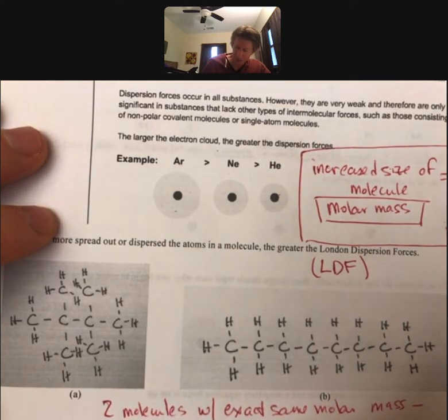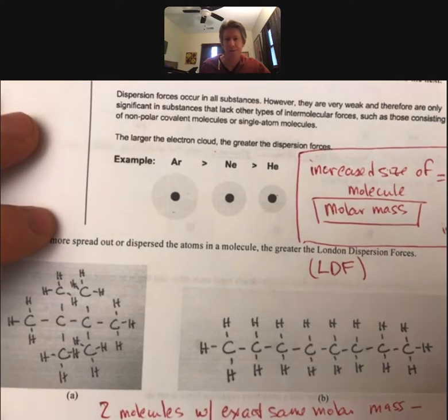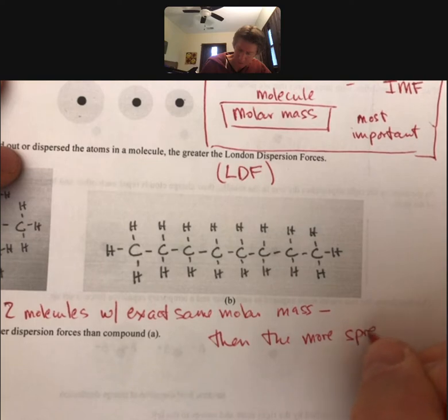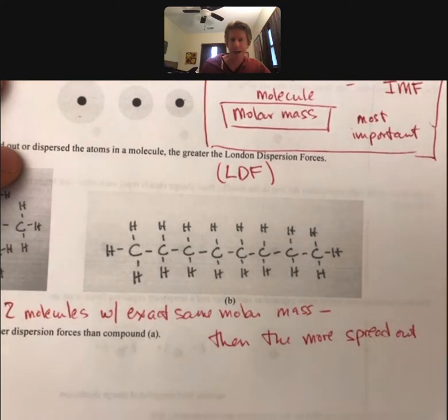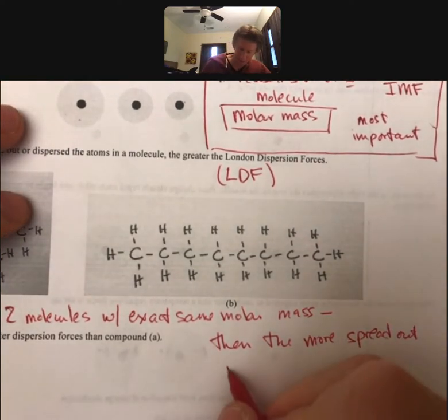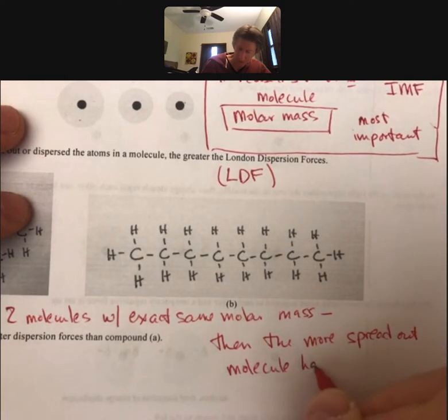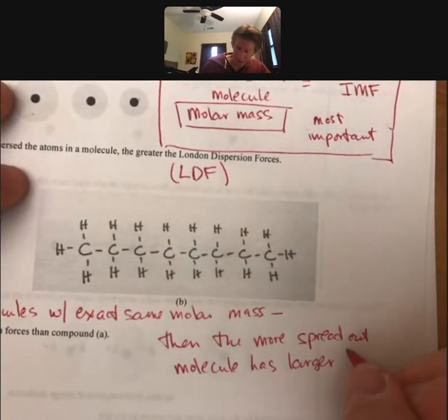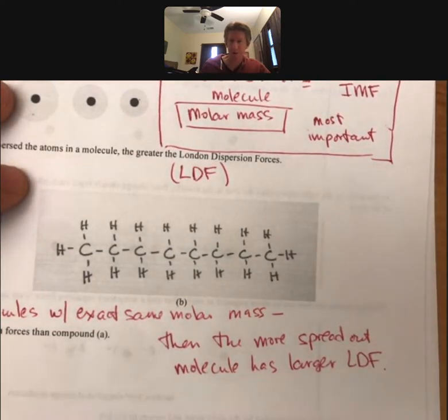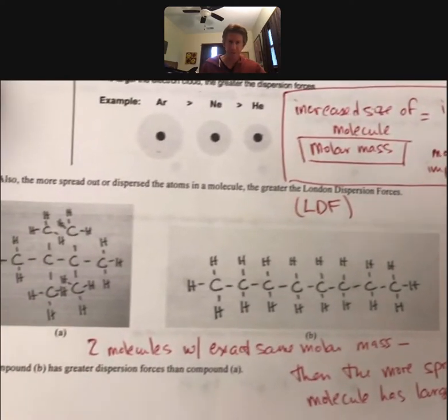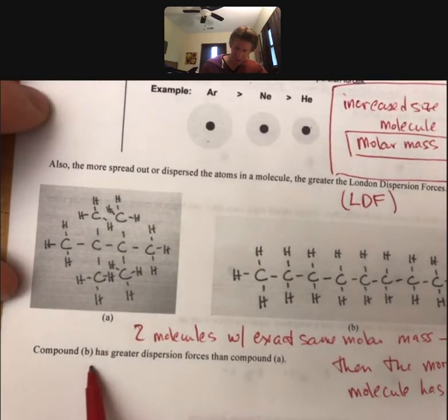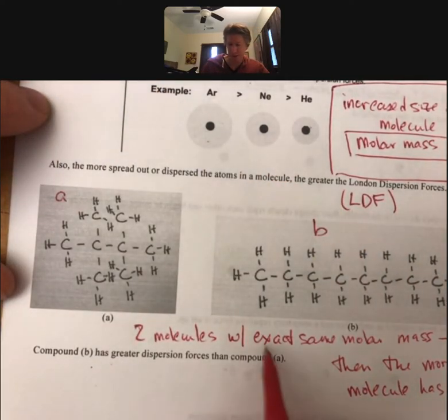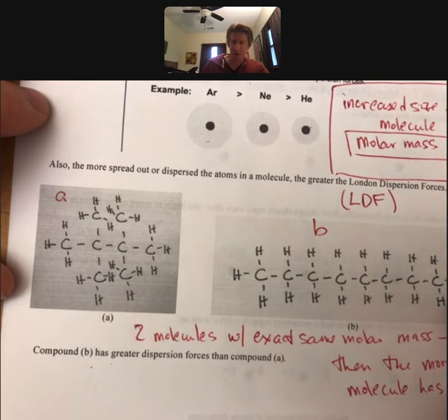Then, the more spread out one. And the more spread out molecule has larger LDF London dispersion forces. So just as it says here, compound B has greater dispersion forces than compound A because it's more spread out.